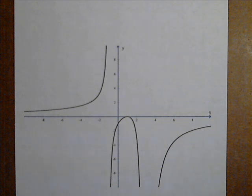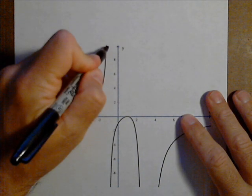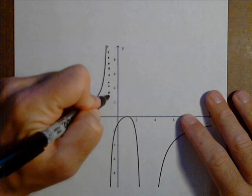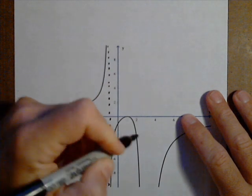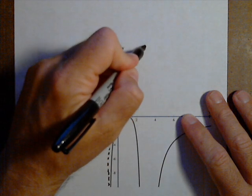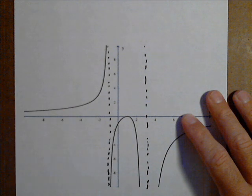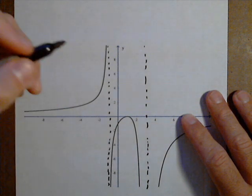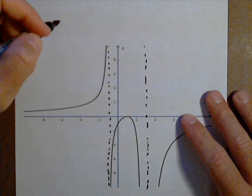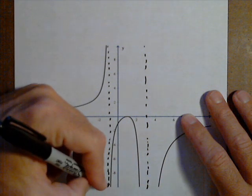First, we want to check for any vertical asymptotes because we know that'll create some factors in the denominator. Right away I see we have one at negative one, and it looks like there's one at about three. The graph kind of cuts off. We can check this with our graphing calculator when we're done.